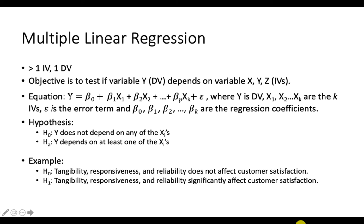The objective for MLR is to test if variable Y, your dependent variable, depends on variables X, Y, and Z — multiple variables. The hypothesis states that Y does not depend on any of the Xs, and the alternative is that Y depends on at least one of the Xs or at least one of the factors. So in your thesis or proposal, when you want to identify which factors influence a dependent variable, this is the analysis you use.